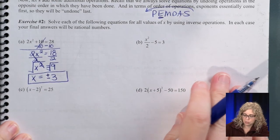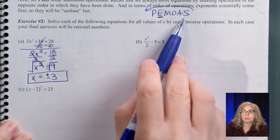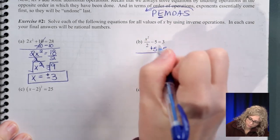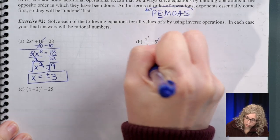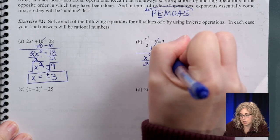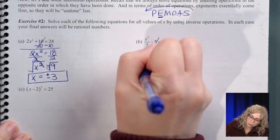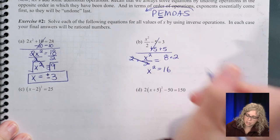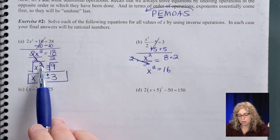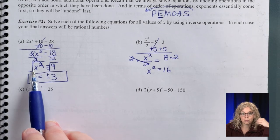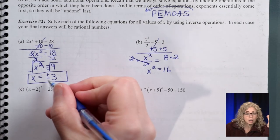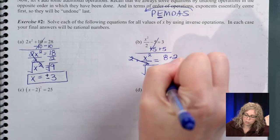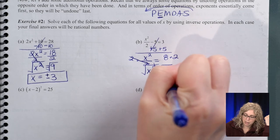Part b: x²/2 − 5 = 3. We have subtraction, so undo that first by adding 5 to both sides: x²/2 = 8. Then multiply both sides by 2: x² = 16. Now take the square root. What number do you square to get 16? That's 4 or negative 4. So x equals ±4.